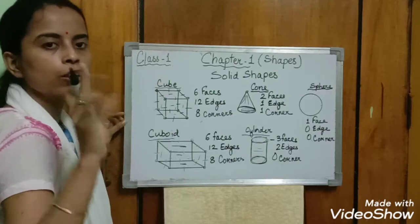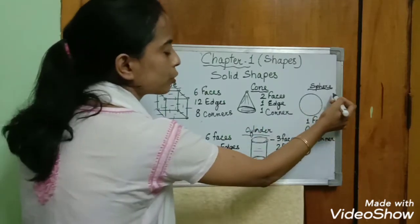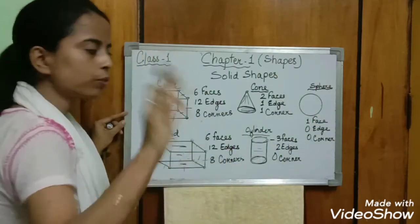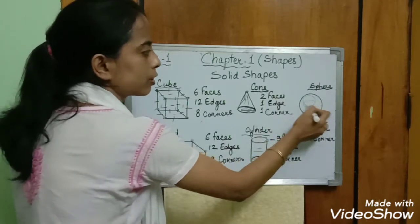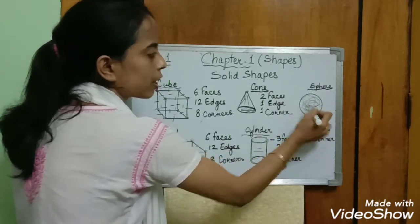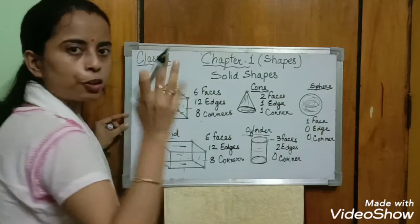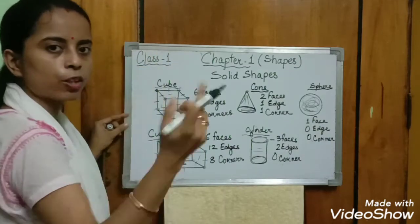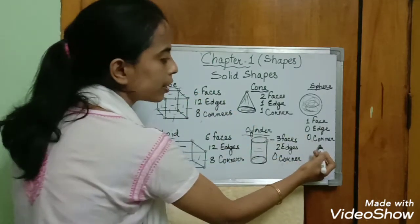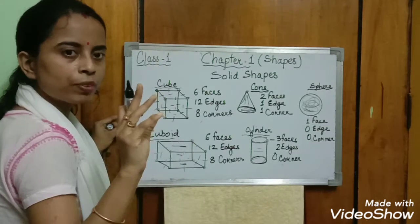Now come to sphere. Sphere is round. It has one face — a curved face. Zero edges, no sides, because it is round. And zero corners — it has no corners.